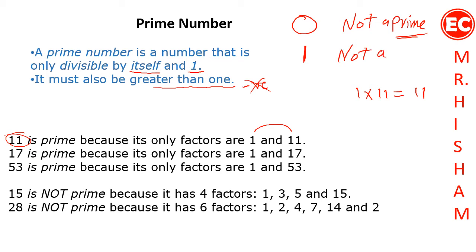Why? One has only one factor, which is itself, and to have a prime number I should have two factors like 11, 17, and 53. But why is 15 not a prime number? Because if you multiply 5 by 3, it will give you 15, and 1 multiplied by 15 gives you 15. So I have four factors for 15.